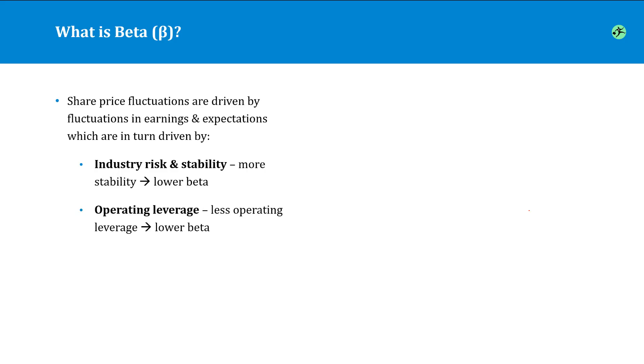If the company has relatively low fixed costs, and therefore low operating leverage, the company's earnings are not going to fluctuate as widely, and therefore it's going to end up having a lower beta as well.